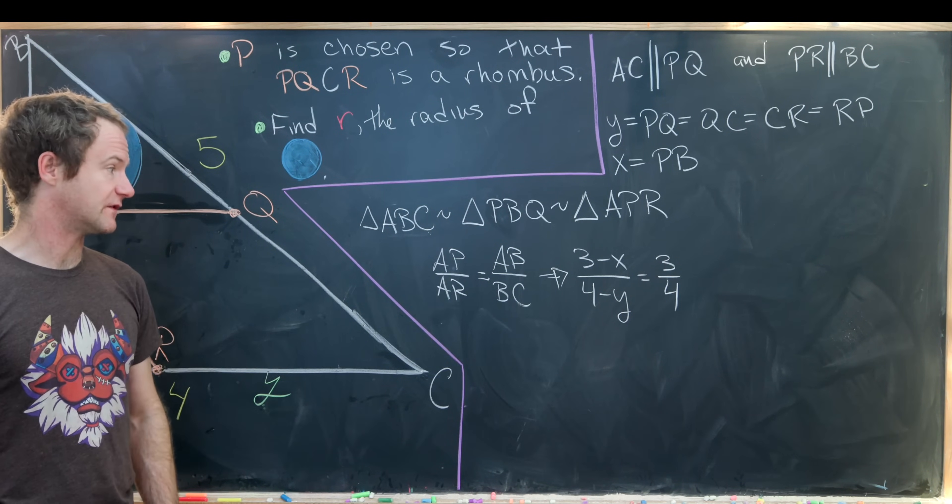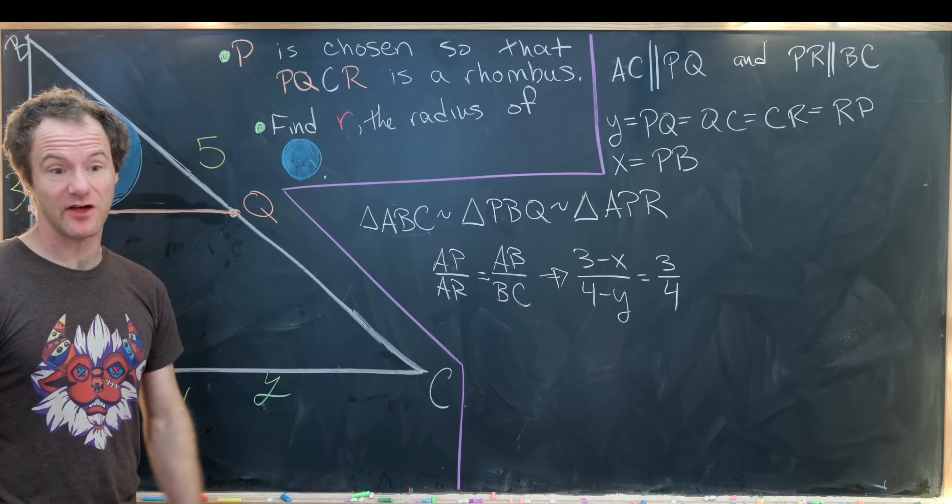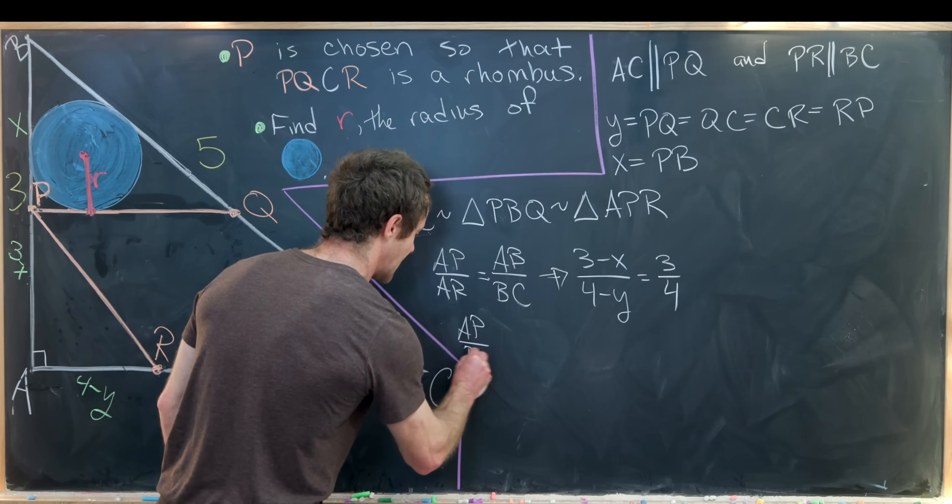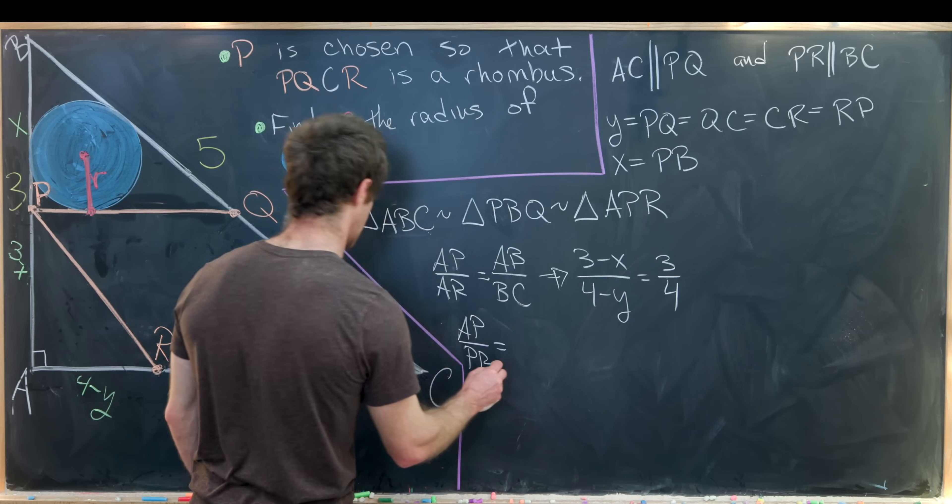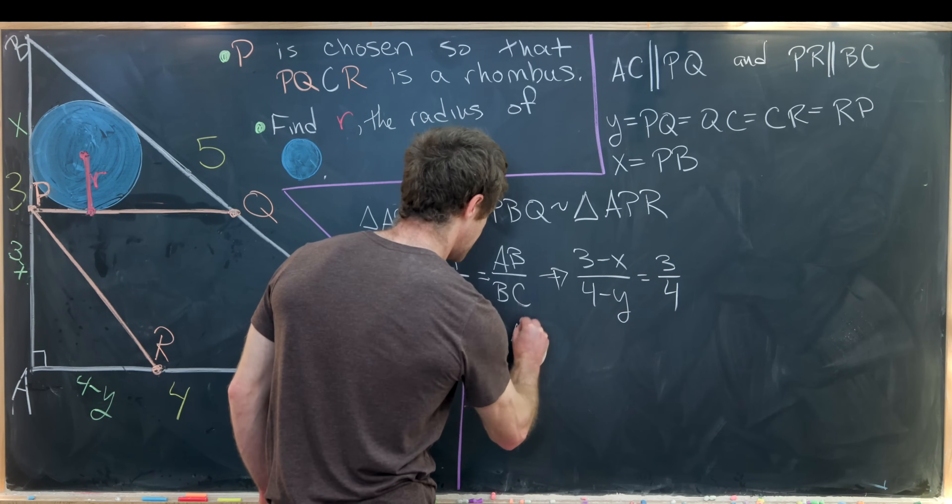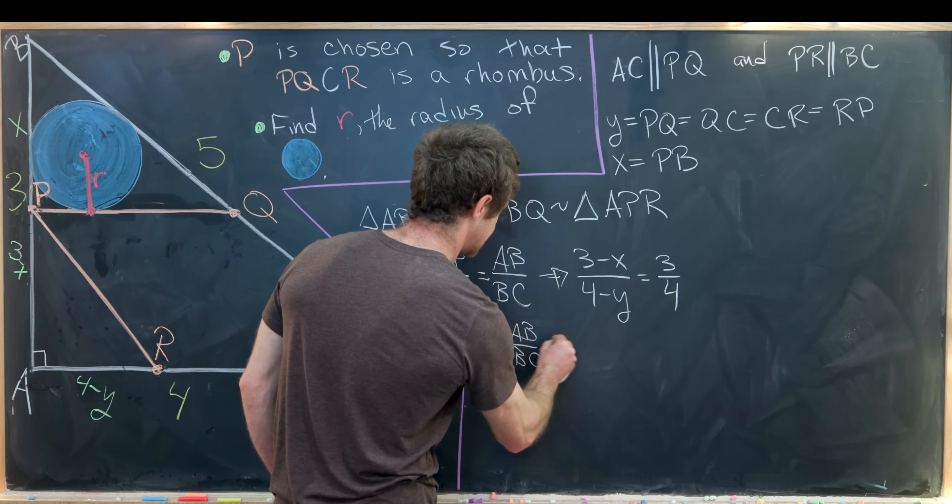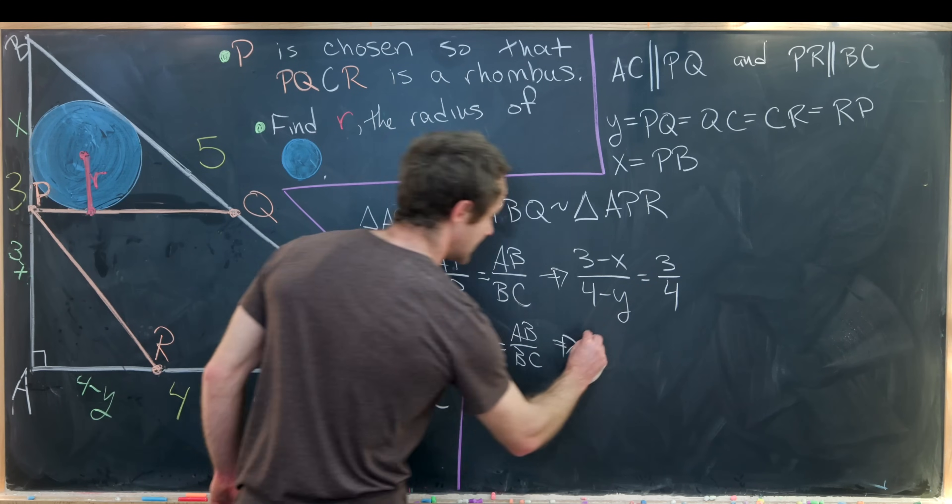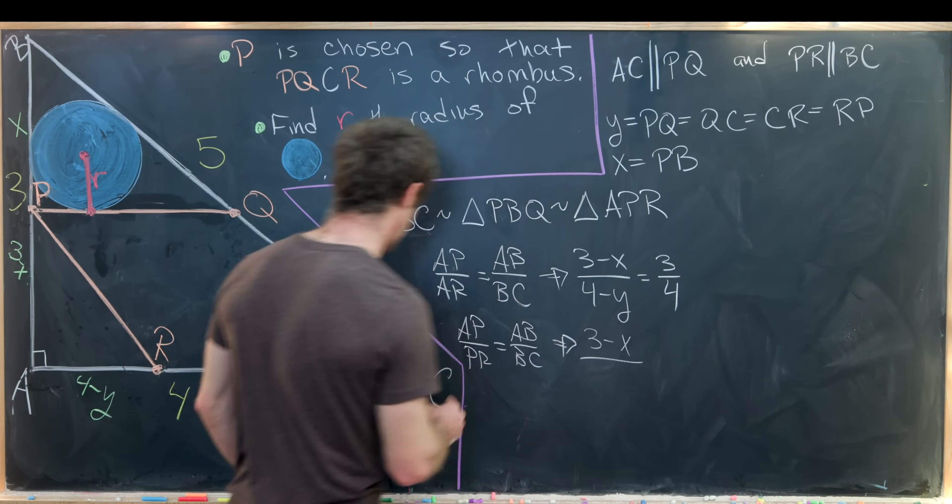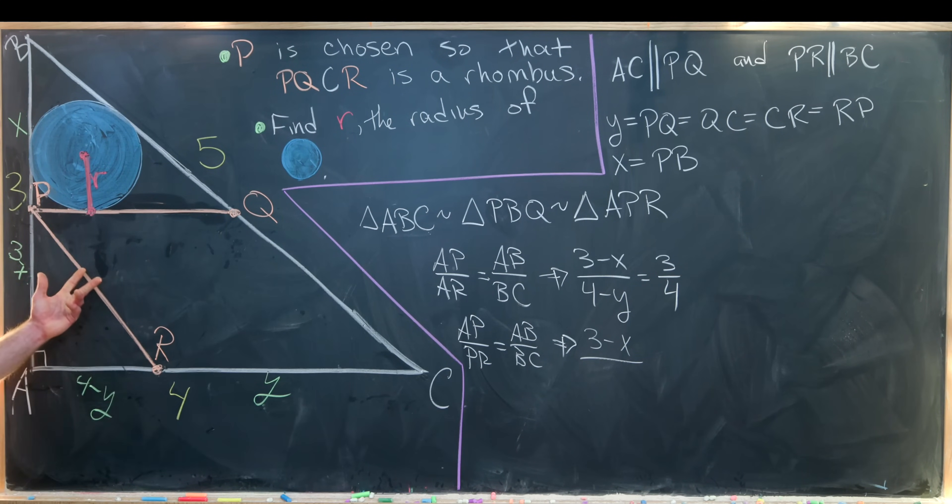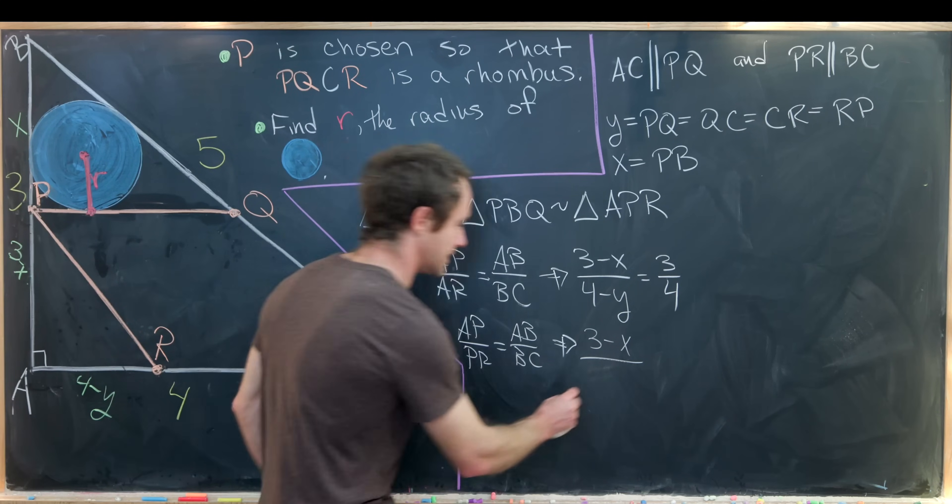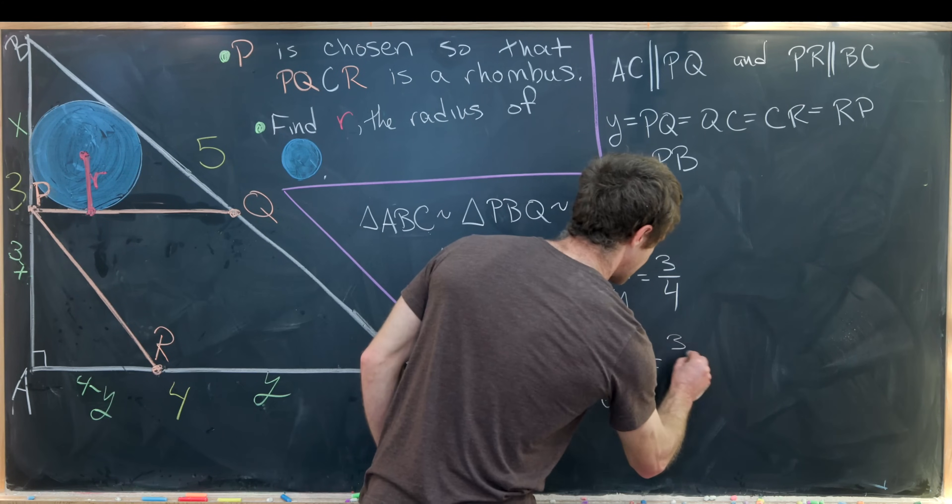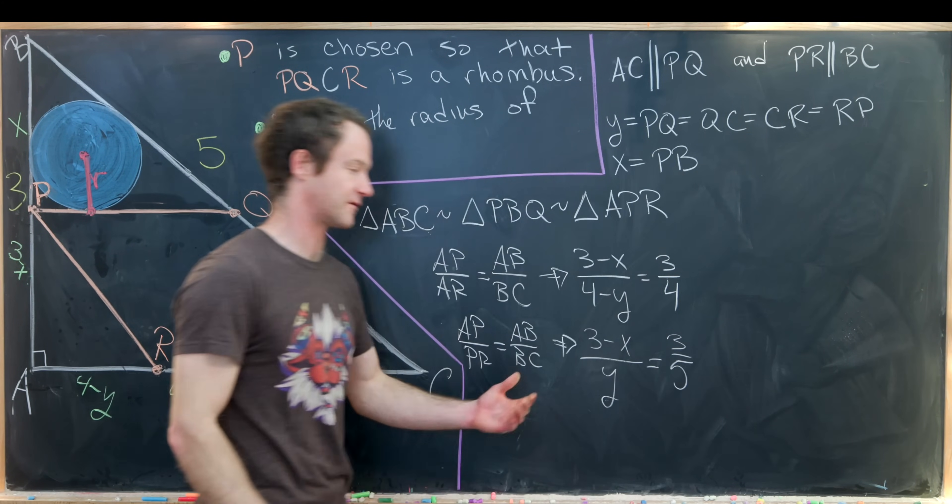Now let's use similarity for another ratio to find another equation. In this case, we'll use the fact that AP divided by PR is the same thing as AB divided by BC. AP, that's 3 minus X again, divided by PR. Well, that's Y because that's one of the sides of our rhombus, equals AB over BC, but that's 3 over 5 because we have a 3-4-5 right triangle.